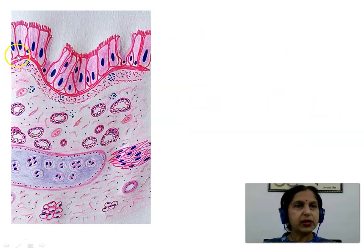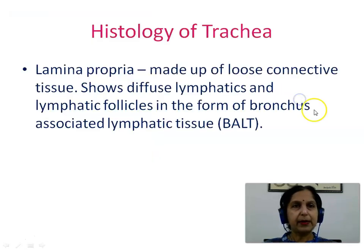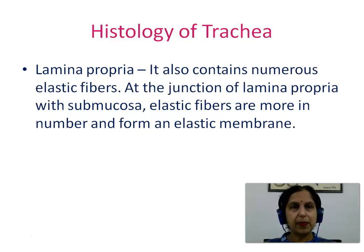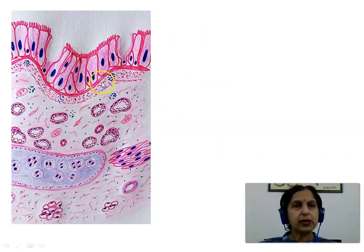The epithelial lining rests on a thick basement membrane or basal lamina. We then see the lamina propria, which is made up of loose connective tissue. It shows diffuse lymphatics and lymphatic follicles in the form of bronchus-associated lymphatic tissue (BALT). It also contains numerous elastic fibers. At the junction of the lamina propria with the submucosa, elastic fibers are more numerous and form an elastic membrane.